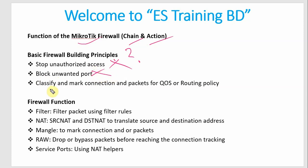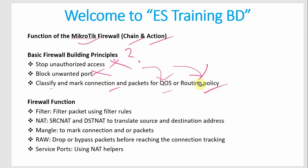Then, classify and mark the connection packets for QoS or routing policy. We will mark the packet and classify the quality of service, routing policy, and MPLS. So let's look at the firewall functions.